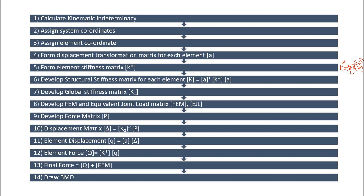We then transform this structural stiffness matrix into global coordinates and develop the global stiffness matrix. Next, we find the fixed end moment and equivalent joint load matrices. After that, we develop the force matrix, which corresponds to the system coordinates and is obtained from the equivalent joint load matrix. Finally, we calculate the displacement matrix using the equation delta equals K_G inverse times P, where K_G is the global stiffness matrix and P is the force matrix.